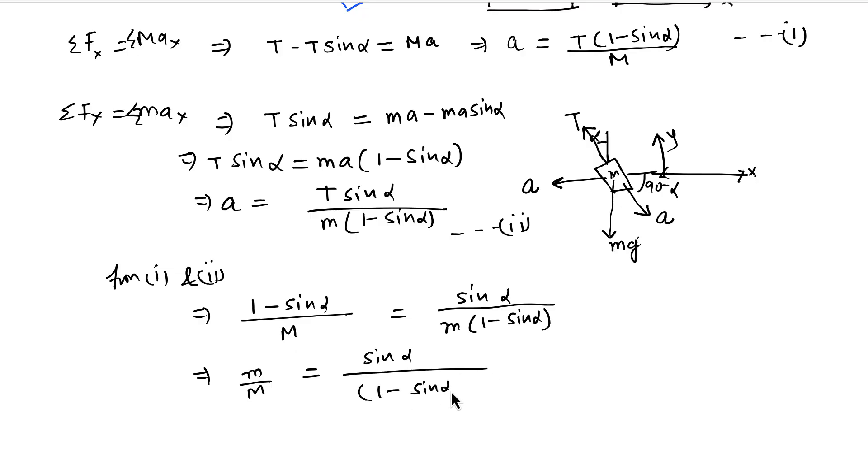So this is the expression that we wanted to compute. And for alpha equal to 30 degrees, we get m by M as 2. So B is the right answer.